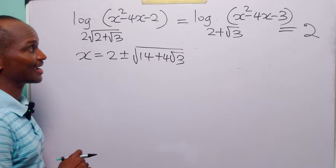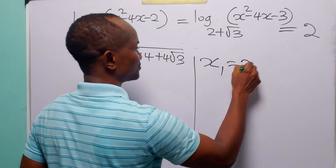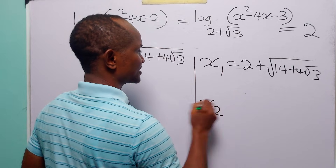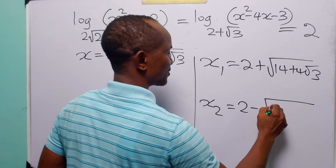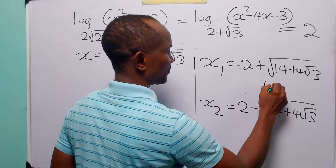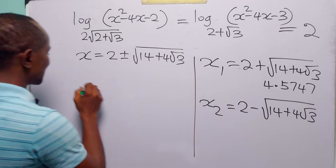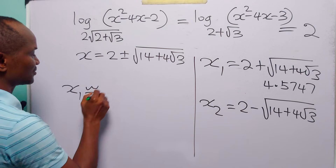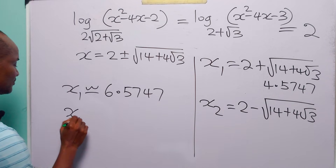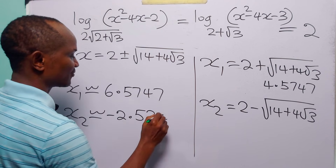So we have the two values of x that satisfy this logarithmic equation. x₁ equals 2 plus the square root of 14 plus 4 root 3, and x₂ equals 2 minus the square root of 14 plus 4 root 3. The square root term is approximately 4.5747, so x₁ is approximately 6.5747 and x₂ is approximately minus 2.5747.